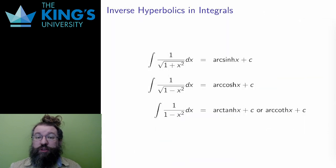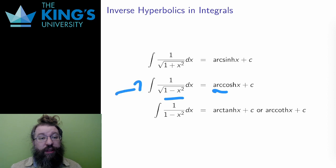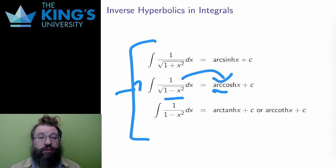This will turn out to be one of the most important uses of the hyperbolics. Since the derivative of arc-cosh is 1 over root x squared minus 1, that means that the integral of 1 over root x squared minus 1 must be arc-cosh. The inverse hyperbolics are required to do the integrals of these particular algebraic functions. And it turns out these are pretty useful integrals to know.